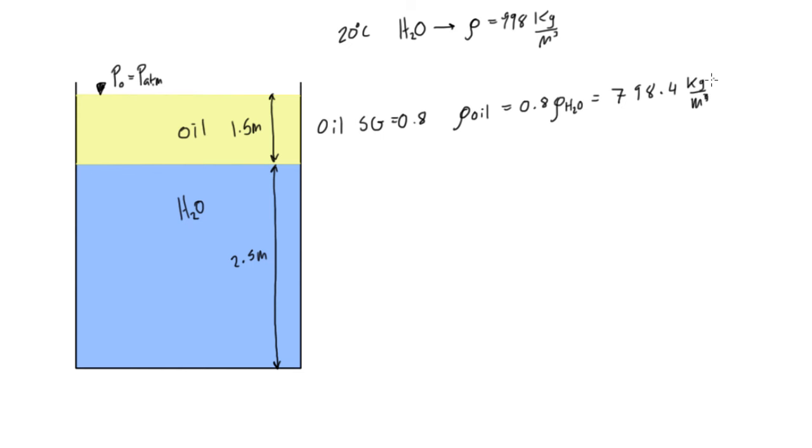Alright, so now we have all the information we need to solve what is the pressure down here. You can even say pressure equals question mark. So, let's call this level here level one. This will be P1 at this boundary.